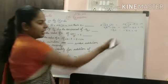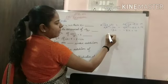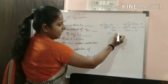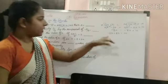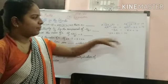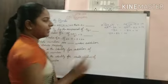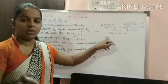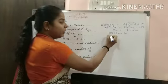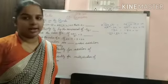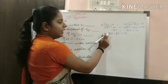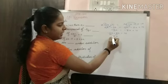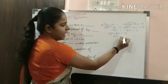Now we are transposing. By transposing this side, minus 3x plus 8x is equal to 10. You can see that minus 3 and plus 8 are there. We subtract and put the sign of the greater number, which is plus. So 8 minus 3 gives us 5x, and 5x equals 10.